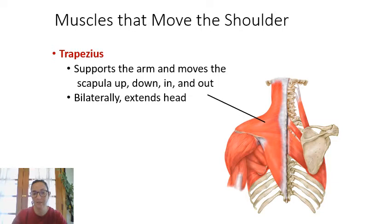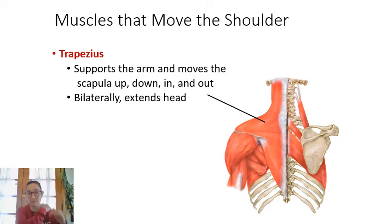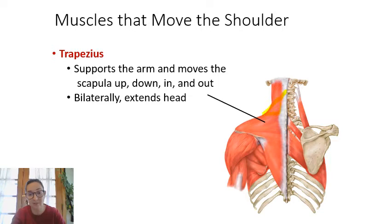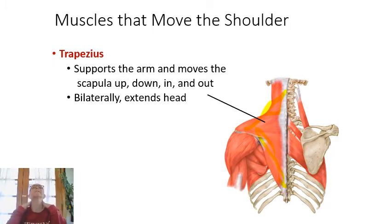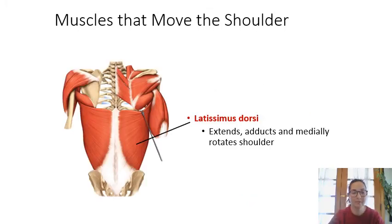Moving down to the neck and shoulder region, trapezius is a large muscle on the back of the neck and shoulder, very important for supporting the arm. It helps move the scapula up to raise the shoulder, and can also pull it down. If both trapezius muscles contract simultaneously, that extends the head — causing the head to move upward.